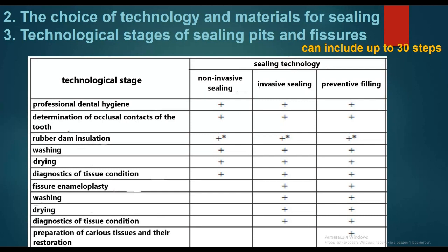For invasive sealing: professional dental hygiene, determination of occlusal contacts, optional rubber dam insulation, washing, drying, diagnostics of tissue condition, then fissure enameloplasty, followed by washing, drying, and diagnostics of tissue condition again.